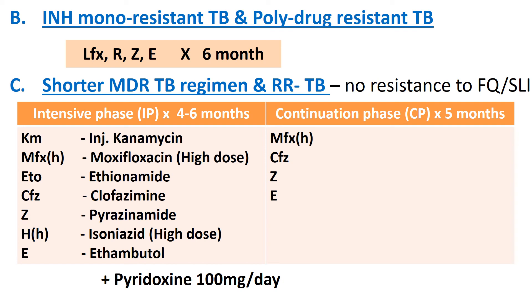Management of isoniazid mono-resistant TB and poly-drug-resistant TB is the same: levofloxacin, rifampicin, pyrazinamide, and ethambutol for six months with no separate intensive and continuation phase. For the shorter MDR-TB regimen and rifampicin-resistant TB cases with no additional resistance to fluoroquinolones and second-line injectable agents: the intensive phase uses injection kanamycin, high-dose moxifloxacin, ethionamide, clofazimine, pyrazinamide, high-dose isoniazid, and ethambutol. The continuation phase uses high-dose moxifloxacin, clofazimine, pyrazinamide, and ethambutol. Pyridoxine prophylaxis is given throughout. The intensive phase is four to six months and continuation phase is five months.